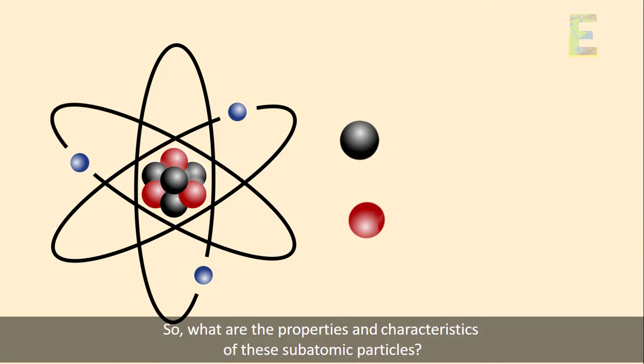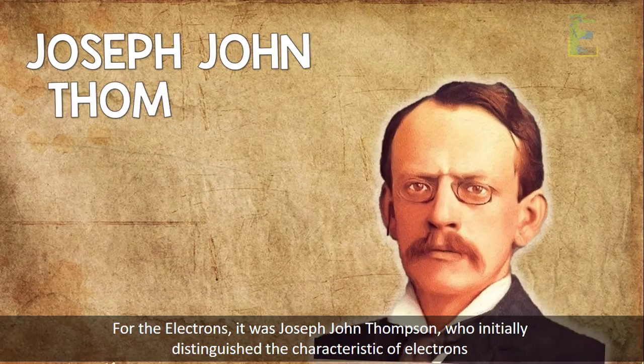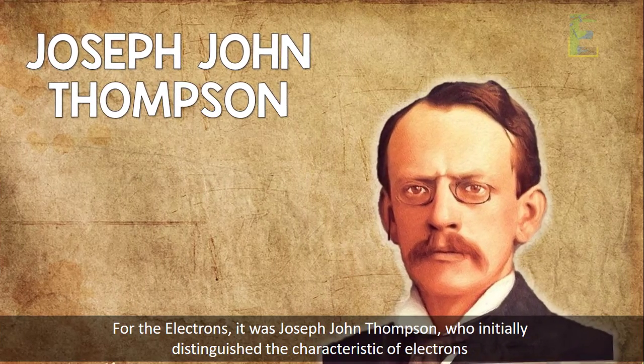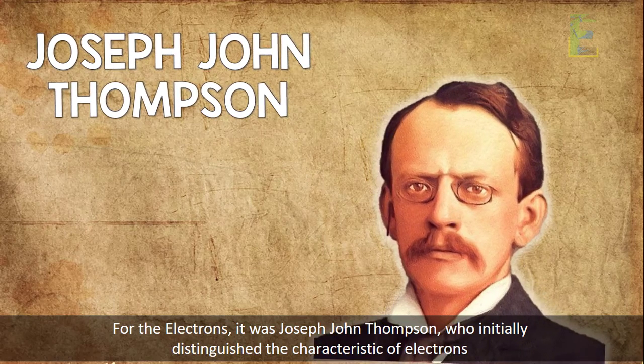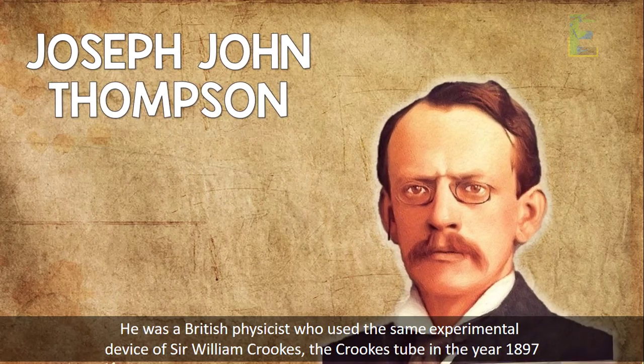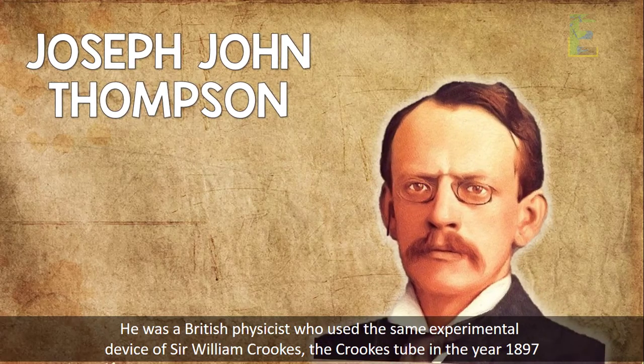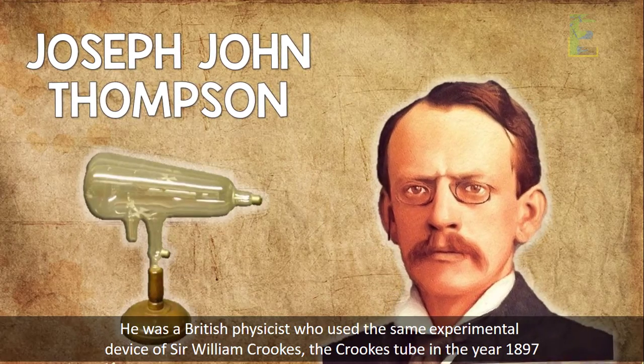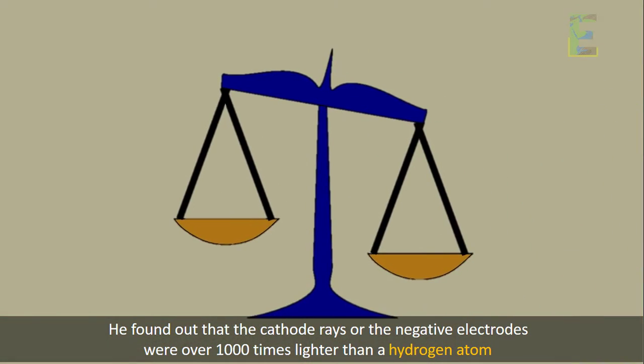So, what are the properties and characteristics of these subatomic particles? For the electrons, it was Joseph John Thompson who initially distinguished the characteristic of electrons. He was a British physicist who used the same experimental device of Sir William Crookes, the Crookes tube, in the year 1897.